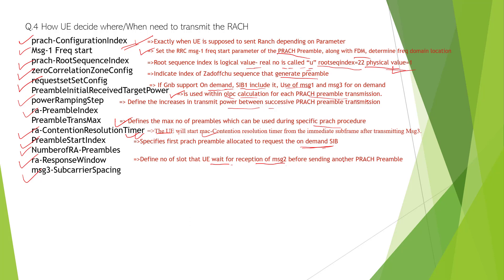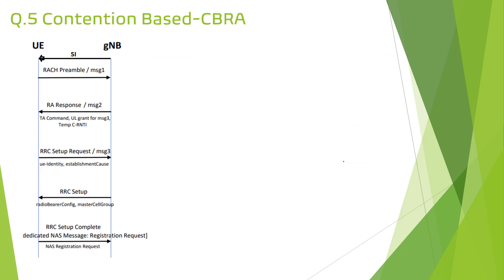Based on all these parameters, the UE decides when it needs to transmit the RACH request. The gNodeB broadcasts system information messages, and those configuration parameters are allocated to the UE in SIB1 messages. The UE then decides when to trigger the RACH based on whatever it receives in the system information message. Next, we will discuss the contention-based and contention-free RACH procedures — how they happen and how they are resolved.